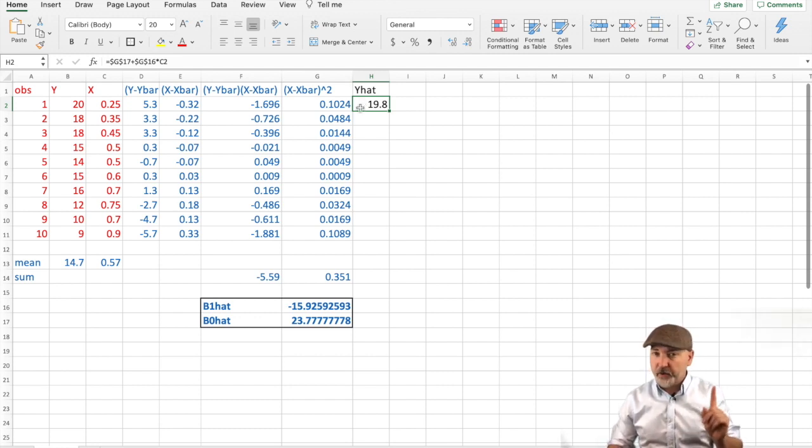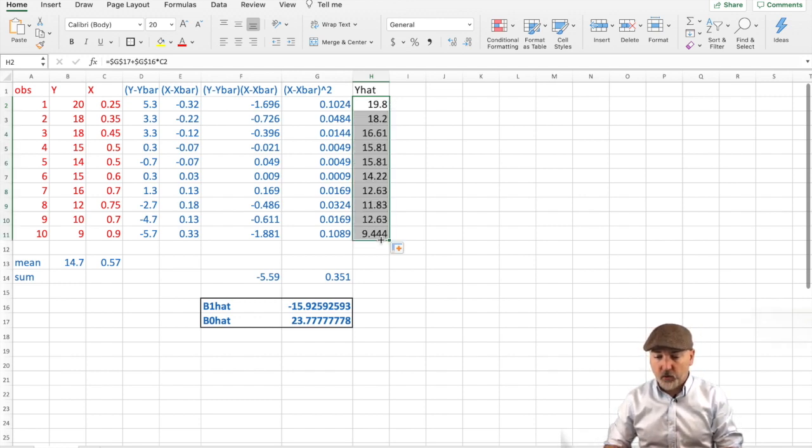Our model predicted observation 1 would have a value of 19.8. The actual value was 20. That's our next step is to figure out how far off we were. Now let's copy this formula all the way down so we get all 10 observations of our predicted values.